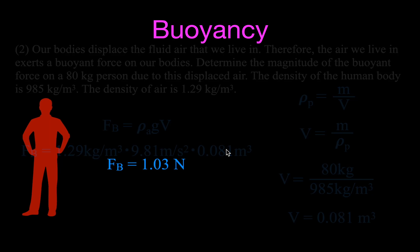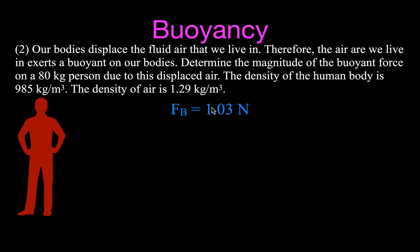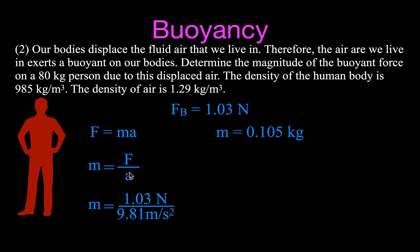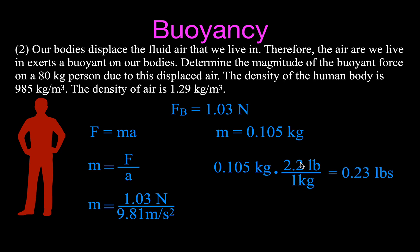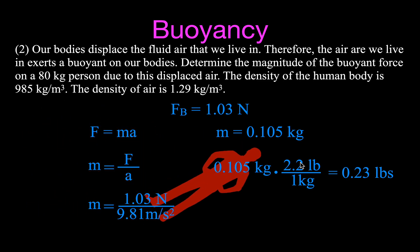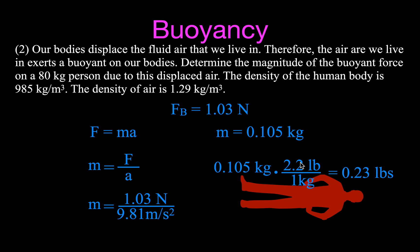Is that a lot? It's not very much, but let's convert it. The buoyant force is about 1 newton, and dividing by 9.81 gives a mass of 0.105 kilograms — about 105 grams. Using the conversion of 1 kilogram ≈ 2.2 pounds, you weigh about 0.23 pounds less when you're in air. If the air were to go away, you'd weigh more — but you'd also be dead, so it wouldn't really matter. That's example number two.